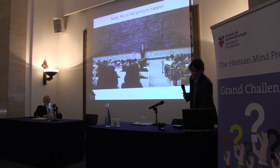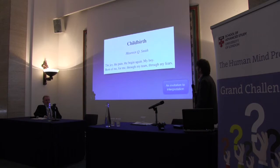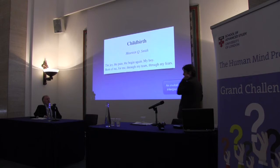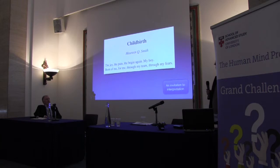It's actually very exciting having this moving target. I'm going to end by coming back to humanity with a poem by Maureen Smith on childbirth. It's a short poem but it packs a punch. It goes: 'The joy, the pain, the begin again, my boy. Born of me, for me, through my tears, through my fears.' You can read poems however you want — that's the beauty of them. You might interpret this as Maureen talking about her own childbirth experience: the begin again is a literal beginning for the child, maybe a rebirth for the whole family, and the fears could be fears for the process of giving birth or fears for the future.